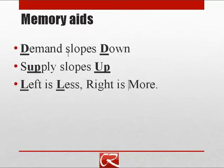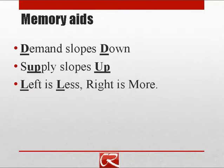As we're going through supply and demand problems, there are a couple of memory aids that should help you keep things straight. First, the demand curve slopes down. That's because the demand curve represents the fact that when prices go up, people buy less, and when prices go down, people buy more. If the demand curve sloped up, we'd be saying that as prices rise, people buy more, which doesn't quite seem right.